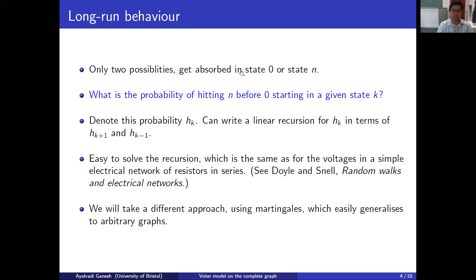We want to calculate the probability that we hit the absorbing state N before hitting the absorbing state 0, and we want to know how this probability depends on the initial condition k. So we start with k voters with opinion 1 and N minus k with opinion 0, and we want to know how likely it is that we hit N before 0. That's how far we got, and we said we are going to answer this question using martingales.